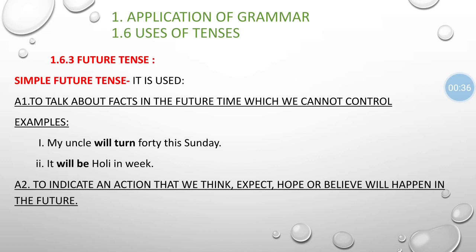In our last three videos we discussed the different kinds of verbs as well as present tense and past tense. Just like present and past, tense has four aspects: simple, continuous, perfect, and perfect continuous — indicating the state or manner of completion of an action.